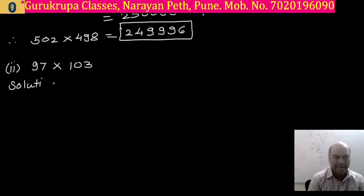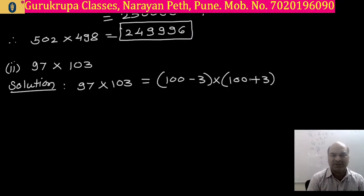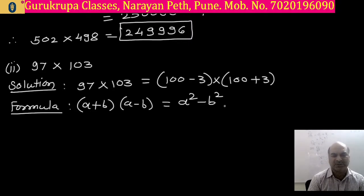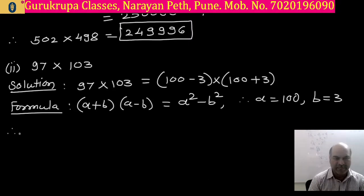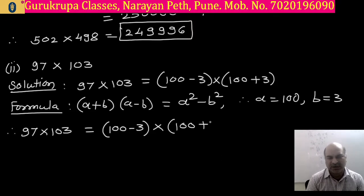In the solution, 97 into 103 can be converted: the nearest number is 100, so 100 minus 3 gives 97, and 100 plus 3 gives 103. We can use the expansion formula: a plus b in bracket, second bracket multiplied by a minus b, is equal to a square minus b square. The value of a is 100 and the value of b is 3. So we write 97 as 100 minus 3 multiplied by 103 as 100 plus 3.